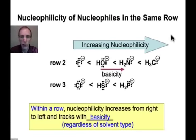And now if we compare a series of anions for different atom types, but all residing in the same row of the periodic table, we see that nucleophilicity increases from the right to the left. It tracks with basicity, as we can see here.